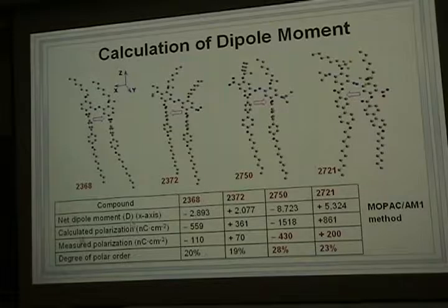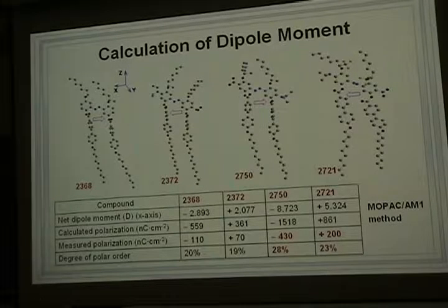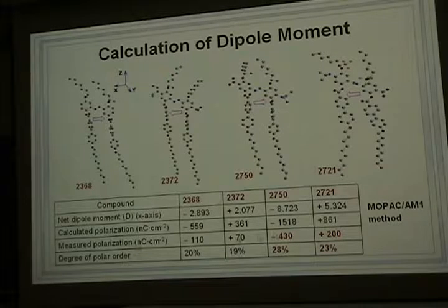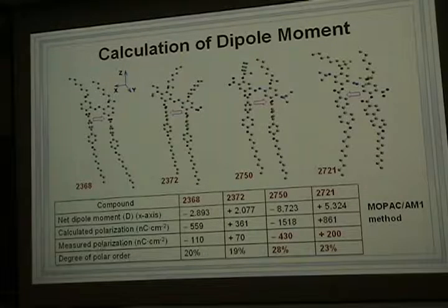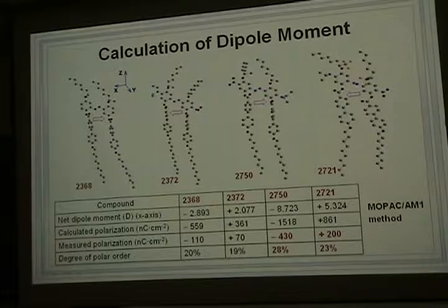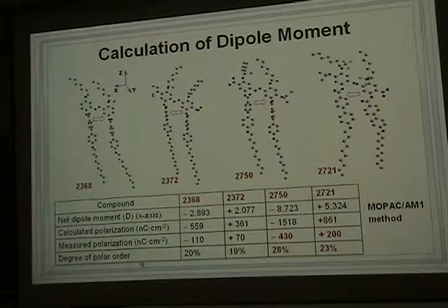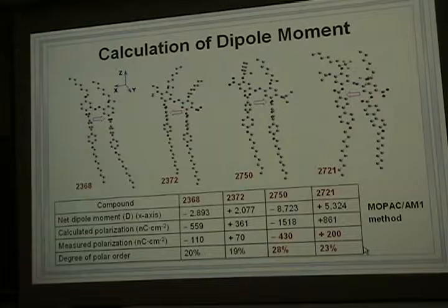By molecular modeling we can calculate the polarization for each compound. Here we have the measured polarization. By comparing the calculated polarization and the measured polarization, we can calculate the degree of polar order for all of them. The degree of polar order is not very high — less than 30%.